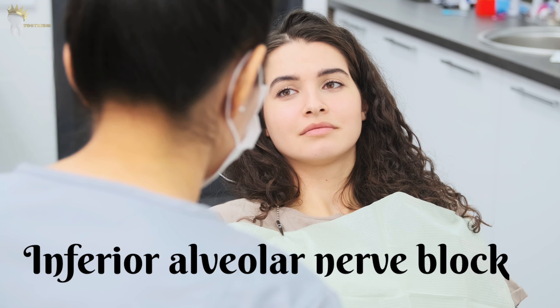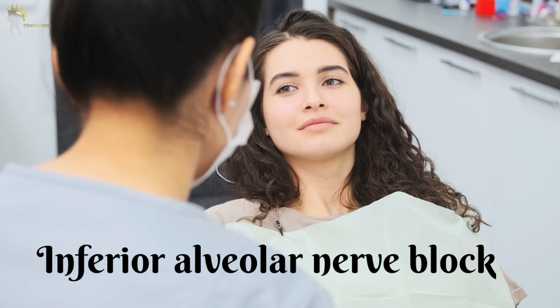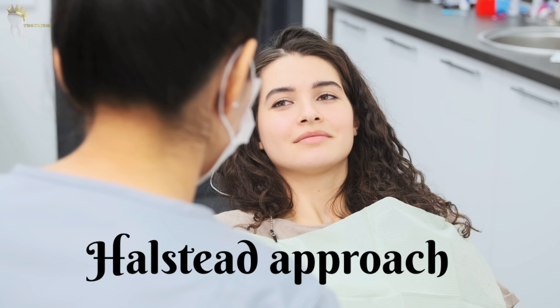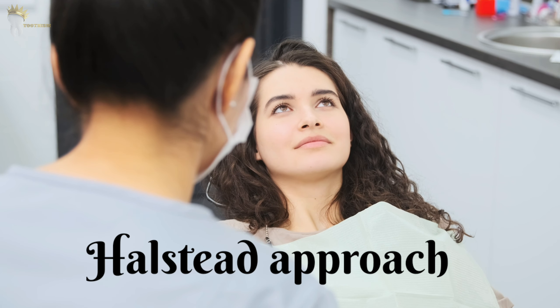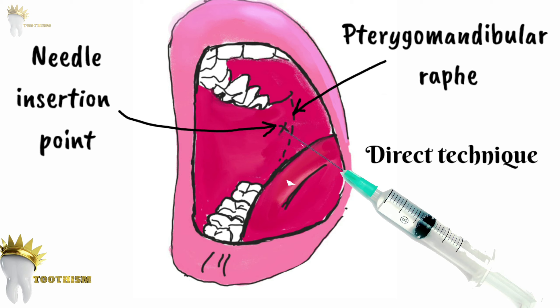Let's start with the inferior alveolar nerve block, which is also known as the Halstead approach. This is a direct technique in which the inferior alveolar nerve is reached by intraoral access before it enters the mandibular canal. This is the most commonly used approach.